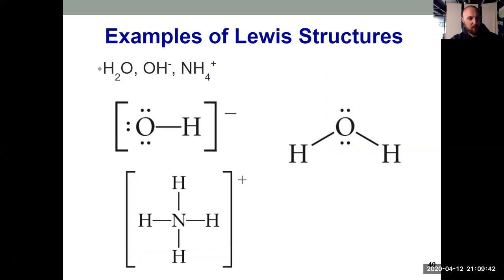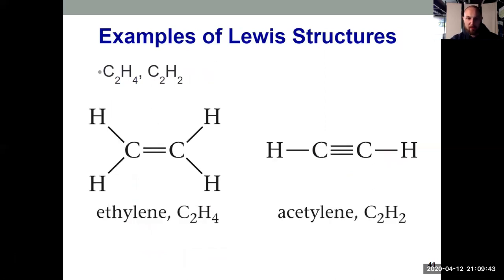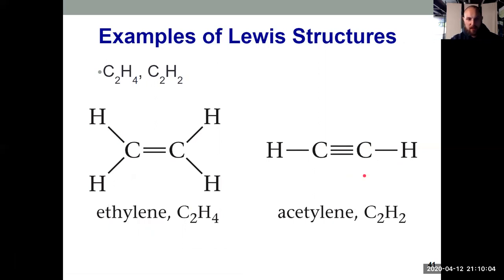Here are examples with higher-order bonds — double bonds and triple bonds. Each line represents two electrons. For example, carbon in a double bond is surrounded by two, four, six, eight electrons. In a triple bond structure: two, four, six electrons in the bond plus two outside equals eight. Each of these carbons also satisfies the octet rule.